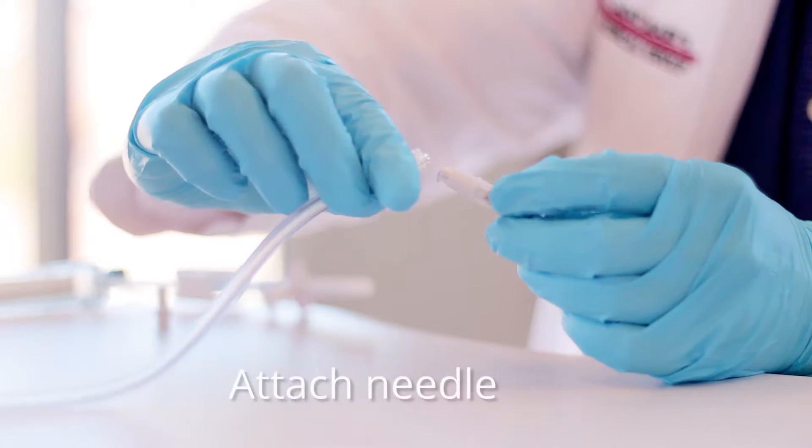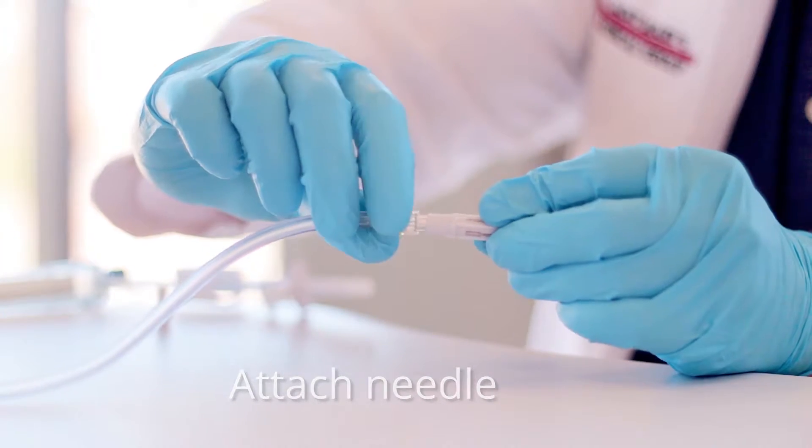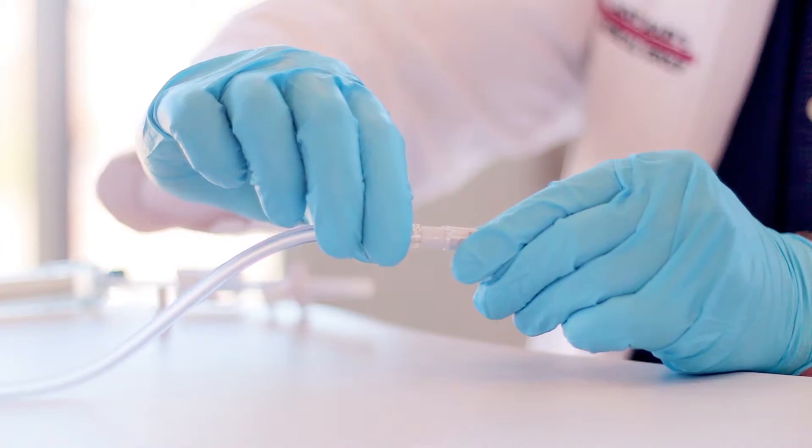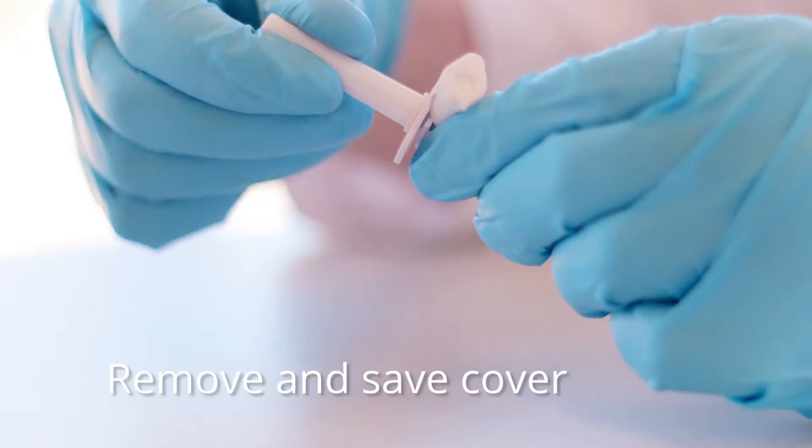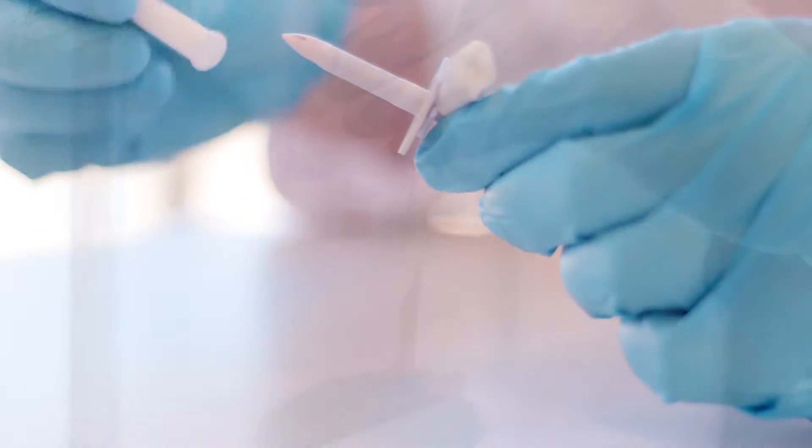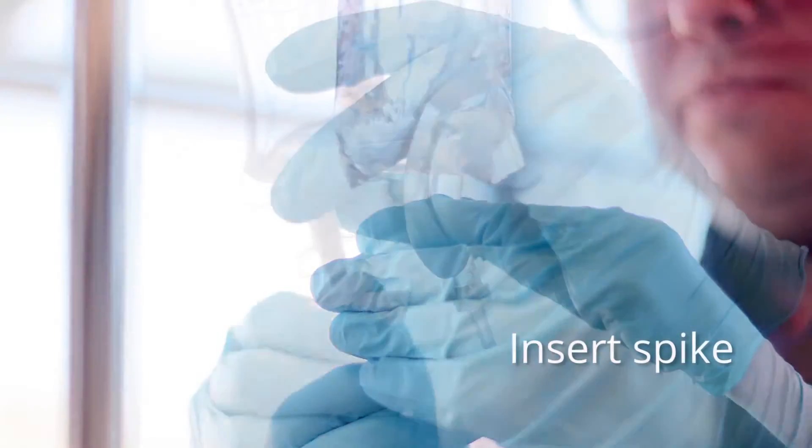Attach the needle to the male luer lock on the distal end of the tubing set. Remove and save the cover on the vented spike. Insert the spike into the source container.